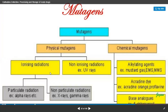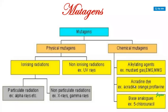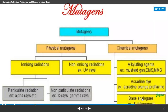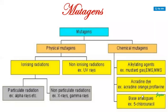Physical mutagens include ionizing radiation (e.g., particulate radiation like alpha rays, and non-particulate radiation like X-rays and gamma rays) and non-ionizing radiation like UV rays. Chemical mutagens include alkylating agents such as mustard gas, EMS, or MMS; acridine dyes like acridine orange and proflavin; and base analogs such as 5-chlorouracil.